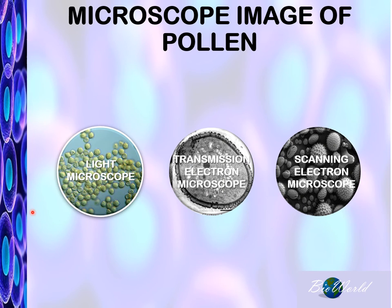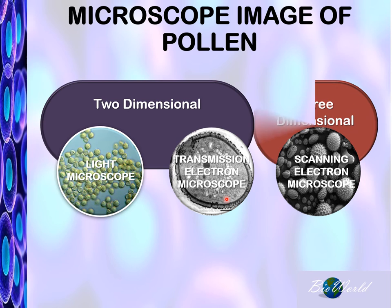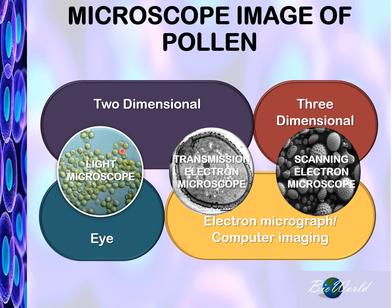The images that we get from the light microscope and the transmission electron microscope are two-dimensional, whereas the image from the scanning electron microscope is three-dimensional. The light microscope image is viewed using our own eye, but the images of the transmission electron microscope and the scanning electron microscope make use of computer software, where the computer will produce an electron micrograph.